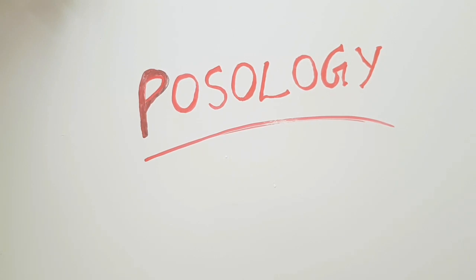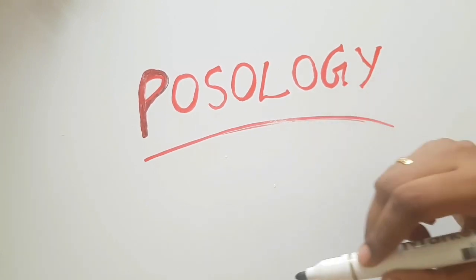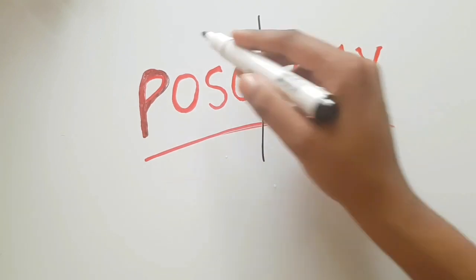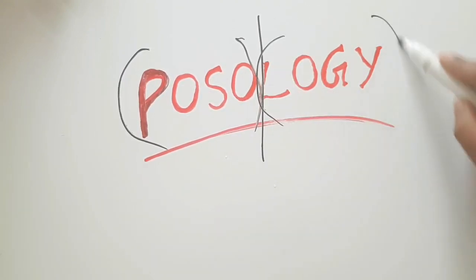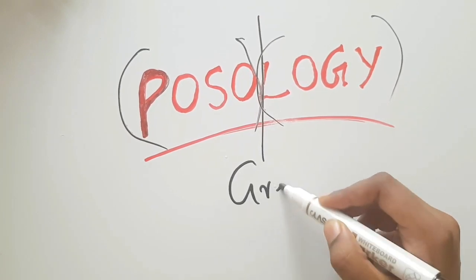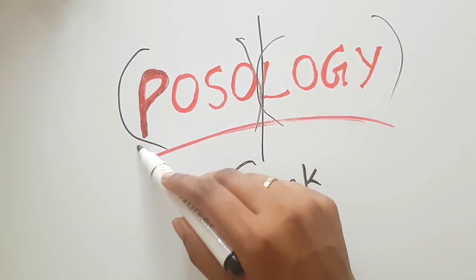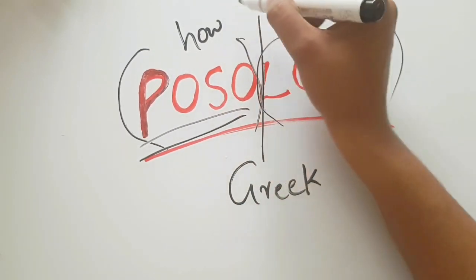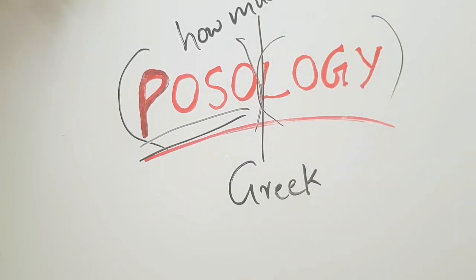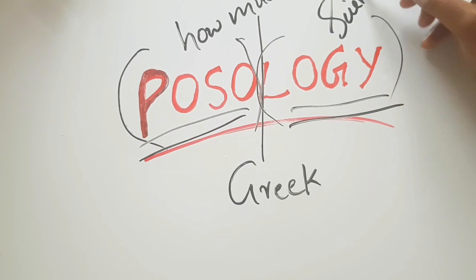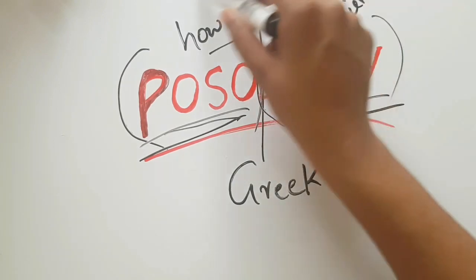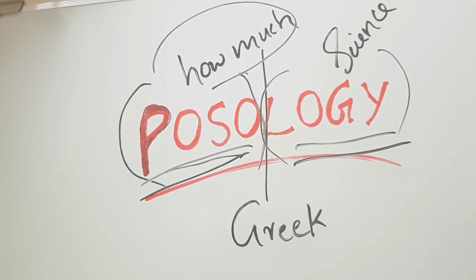Do you know what is meant by Posology? First, let's divide this topic into two words: Posos and Logos. This theme, Posology, is derived from a Greek word. Posos means how much, and Logos means the science. So this word Posology is derived from two Greek words - Posos meaning how much, and Logos meaning science.